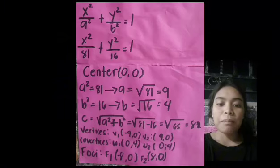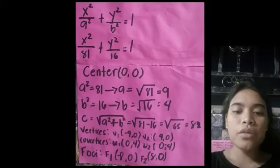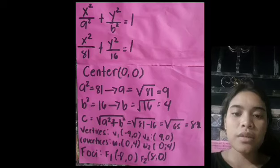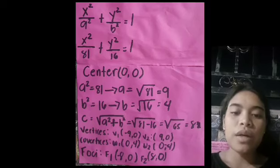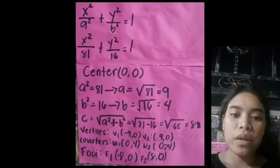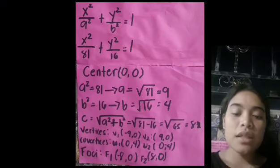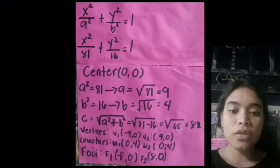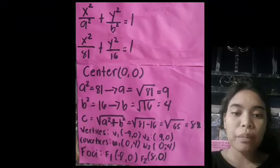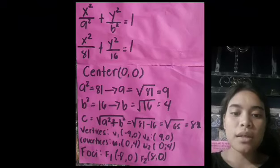To find the co-vertices, we need to find the square root of b². The b² is 16, so the square root of 16 is 4. So our co-vertices is (0, 4) and (0, -4).